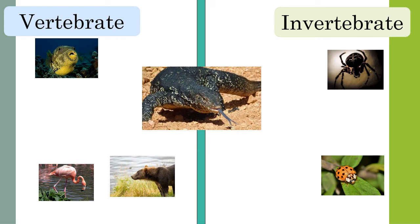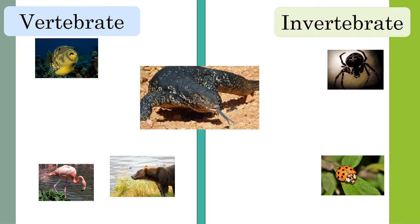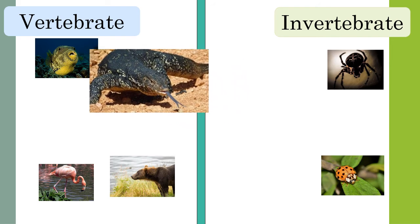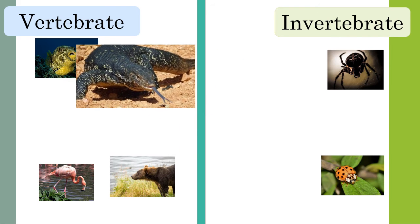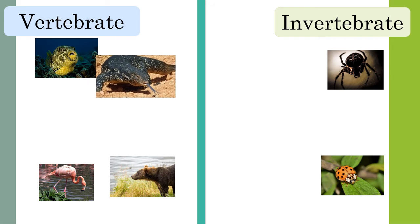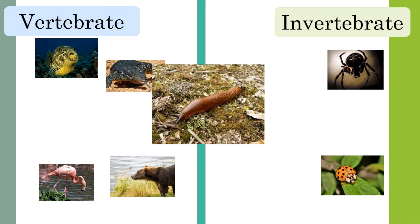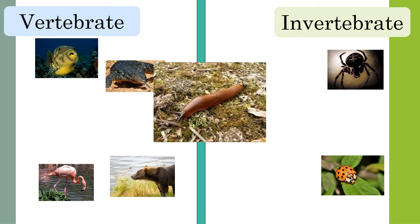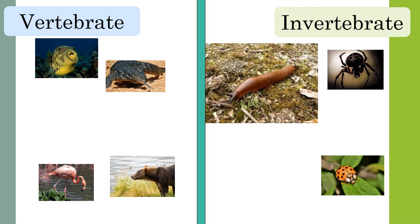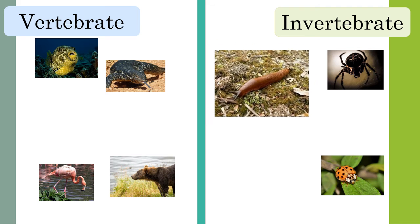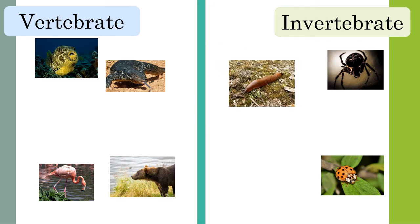What about the Komodo dragon? A Komodo dragon also has a backbone — it is a type of reptile and belongs to the vertebrate group. Which group does the slug belong to? A slug is a type of mollusk. It has a soft unsegmented body and belongs to the invertebrate group.